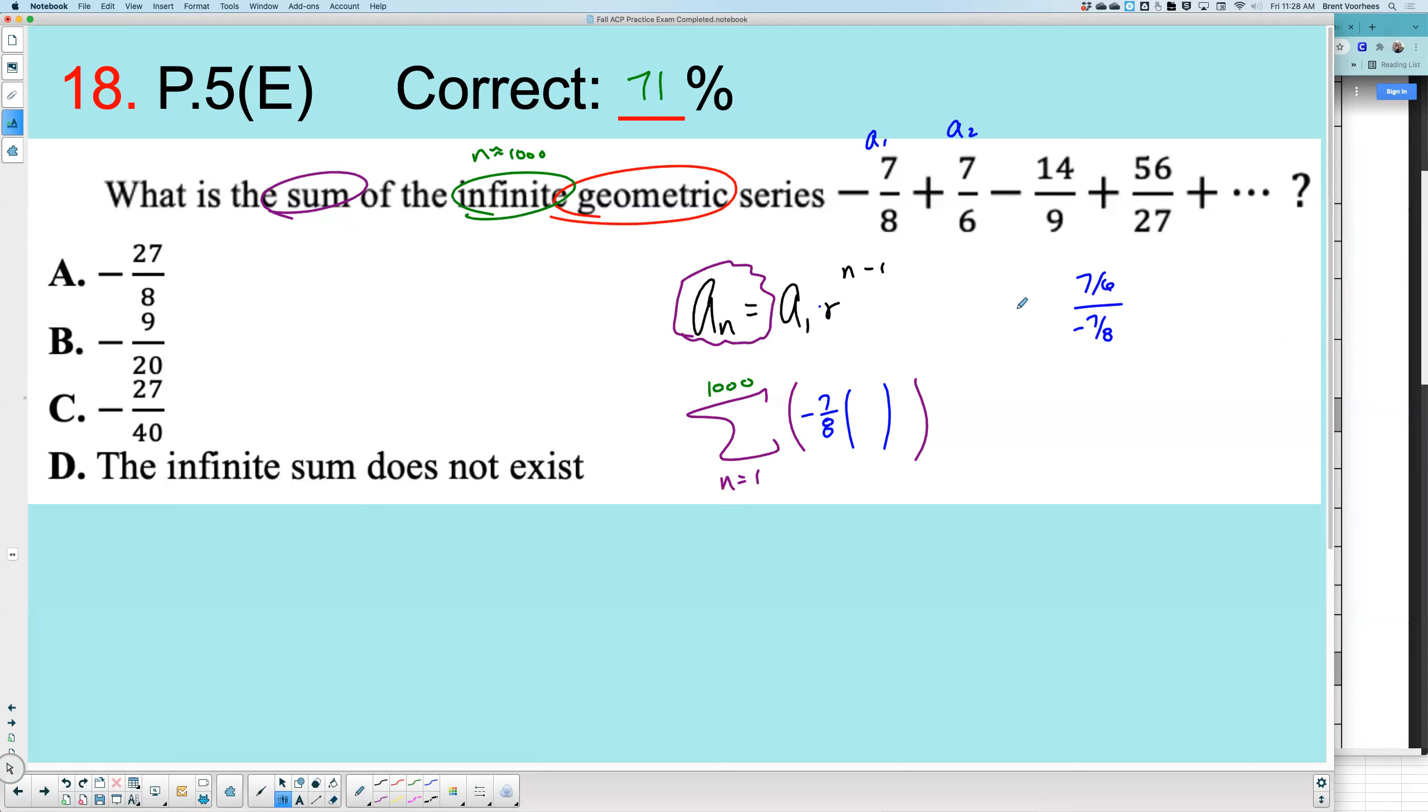Now, when you type this in Desmos, it's tricky to get this because it's a fraction divided by a fraction. It's easy to mess it up. So what I'm going to do is put this in parentheses to make sure I do not mess this part up. So this parentheses divided by this parentheses will make it a lot simpler.